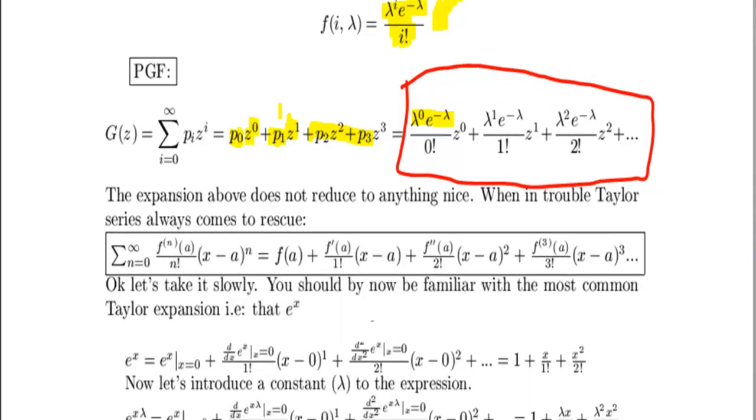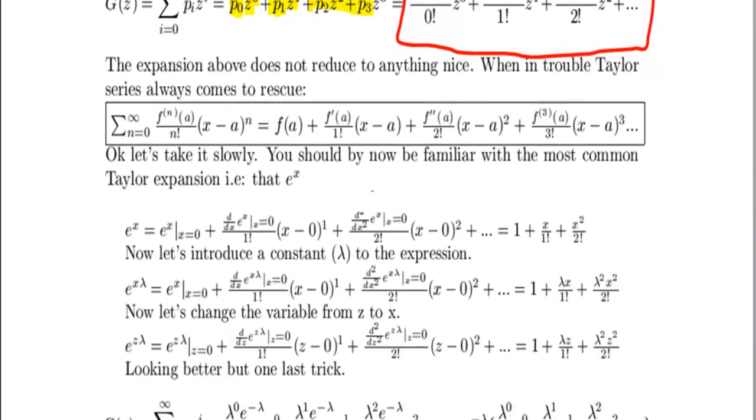When we are in trouble with series, you can always rely on Taylor expansion. And Taylor expansion basically says you can represent a function as the derivative of this function, evaluated at point a, divided by n factorial, where n stands for the nth derivative. And then you also have to times it by x minus a to the power of n.